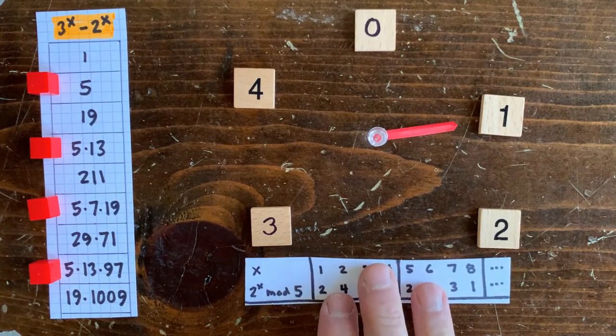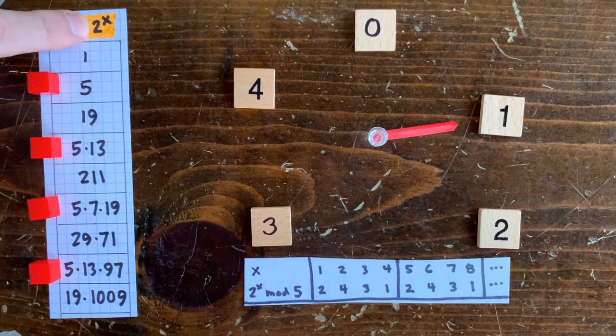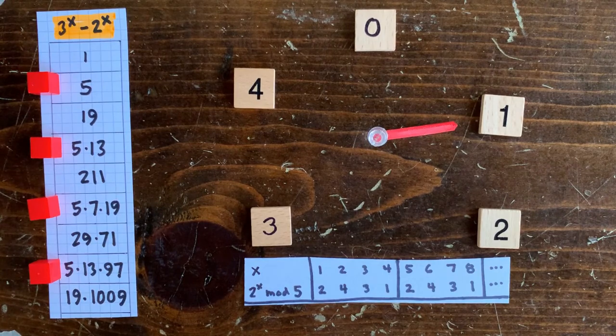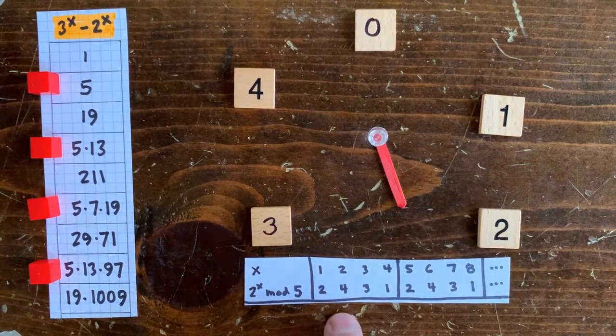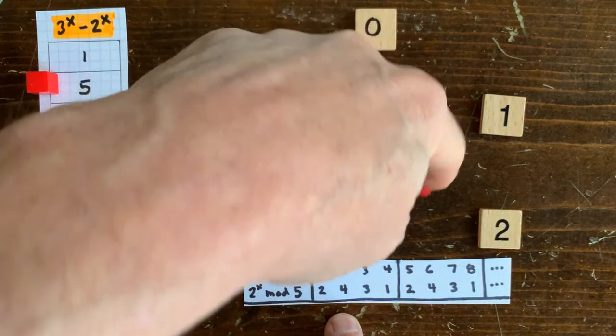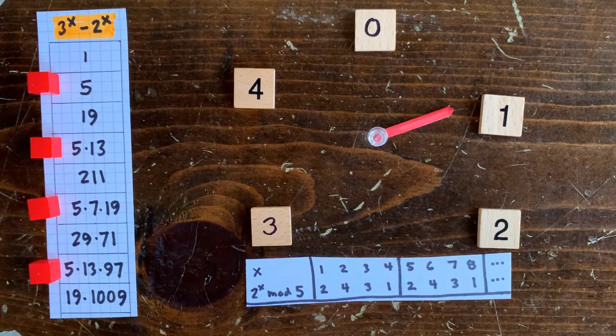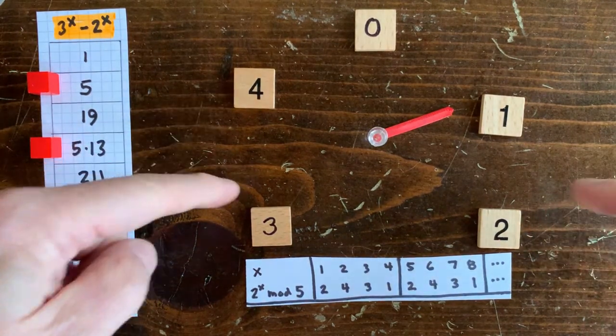So an interesting thing happens here. The clock goes from 2 o'clock to 4 o'clock to 3 o'clock to 1 o'clock, and then once it hits 1 o'clock it repeats again: 2, 4, 3, 1. And notice that in this case it hits every hour on the clock except for 0 because 2 to the x is never going to be divisible by 5.